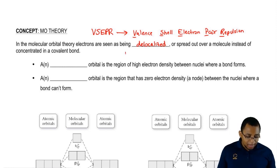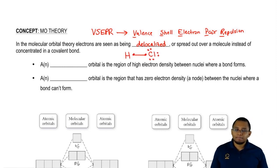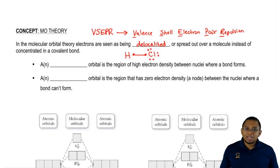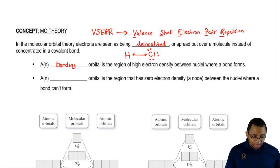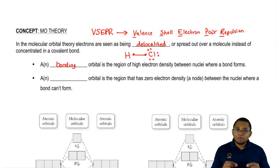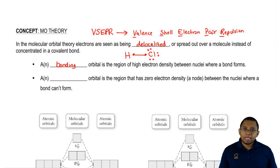Let's say we have a compound, hydrogen connected to Cl. They're forming a covalent bond with each other. Realize that when it comes to a covalent bond, we have to see it as this. We have two forces basically fighting against each other. We're going to have a bonding orbital, which is the region of high electron density between nuclei where a bond forms.